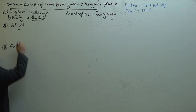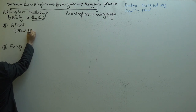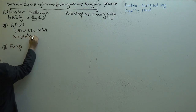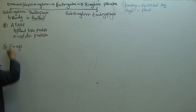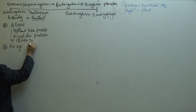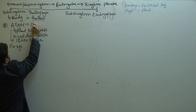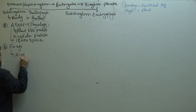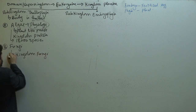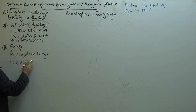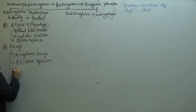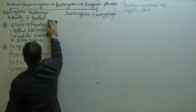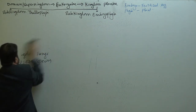Nowadays, algae are discussed under plant-like protists in Kingdom Protista. Algae have a total of 18,000 species and the study of algae is called phycology. Fungi are discussed in Kingdom Fungi with about 80,000 species, and the study of fungi is called mycology. Therefore, the sub-kingdom Thalophyta has been removed, and we now only focus on sub-kingdom Embryophyta.